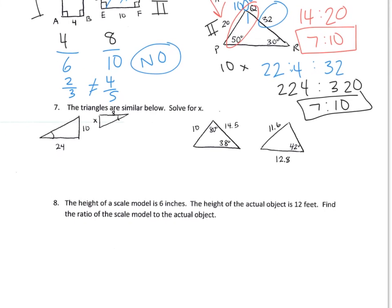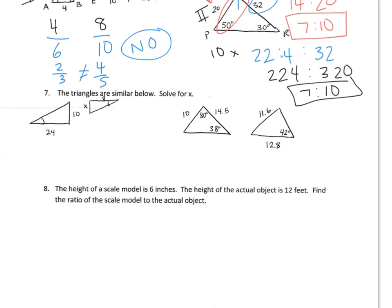Number seven, the triangles are similar. Solve for X. Actually, this one doesn't even have an X on it, so I'm not going to do that. But the triangles are similar. So I'm going to set up a proportion. So 10 is to 24 as X is to 8. So 80 equals 24X. X equals 80 divided by 24 is 3 and a third. And there's no unit, so I'm just going to leave it as 3 and a third.